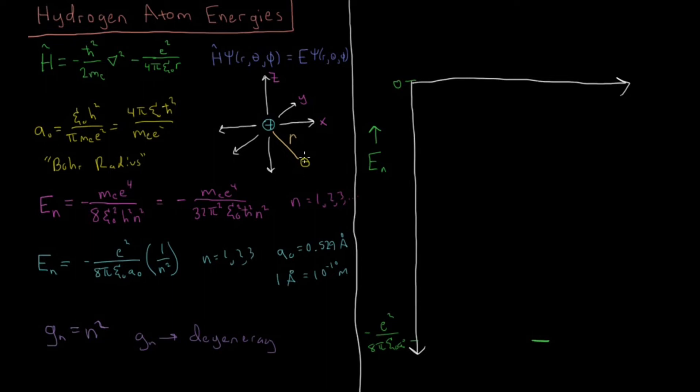So if you wanted to take an electron in the ground state of the hydrogen atom and remove it infinitely far away from this proton, such that it was no longer bound, it would take the absolute value of this amount of energy to do that. So this is the energy of the ground state or the ground state ionization potential of the hydrogen atom.